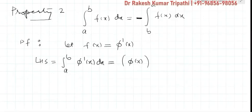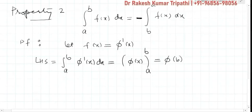So differentiation and integration will cancel each other. Limit from a to b. Lower limit is a, upper is b. So its outcome is φ(b) minus φ(a).